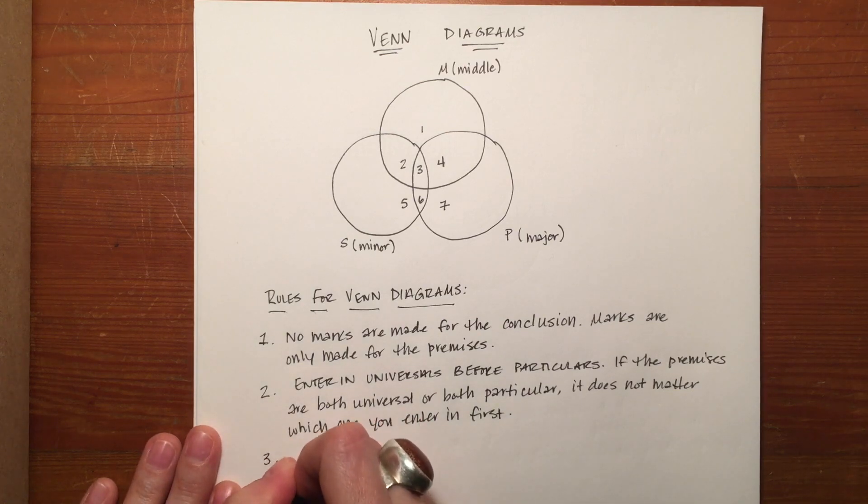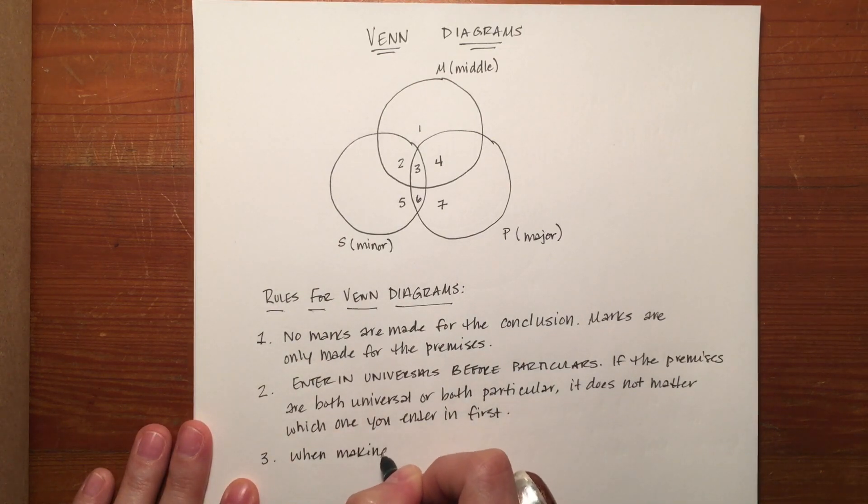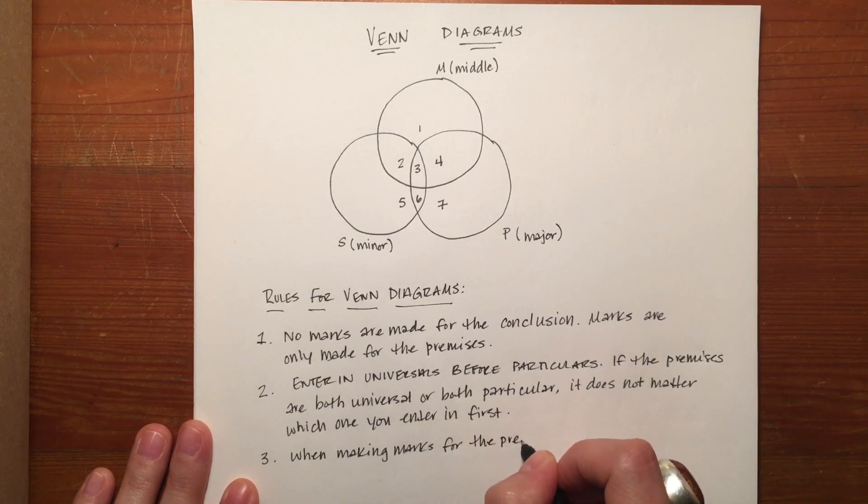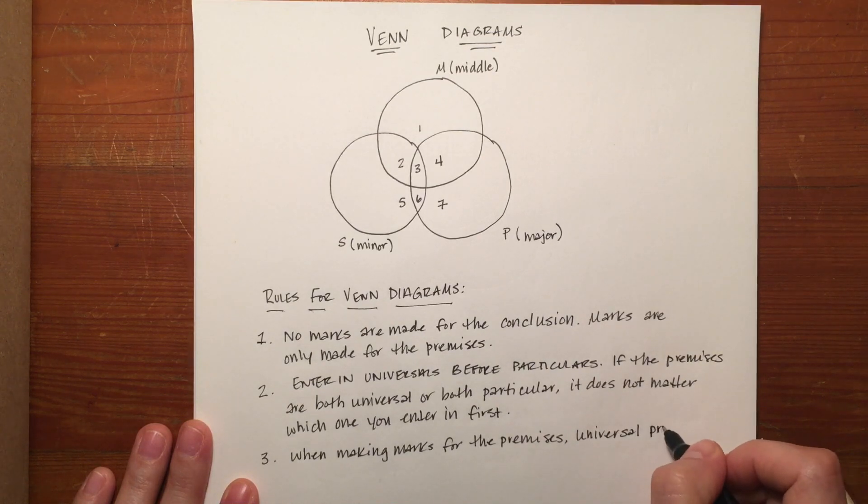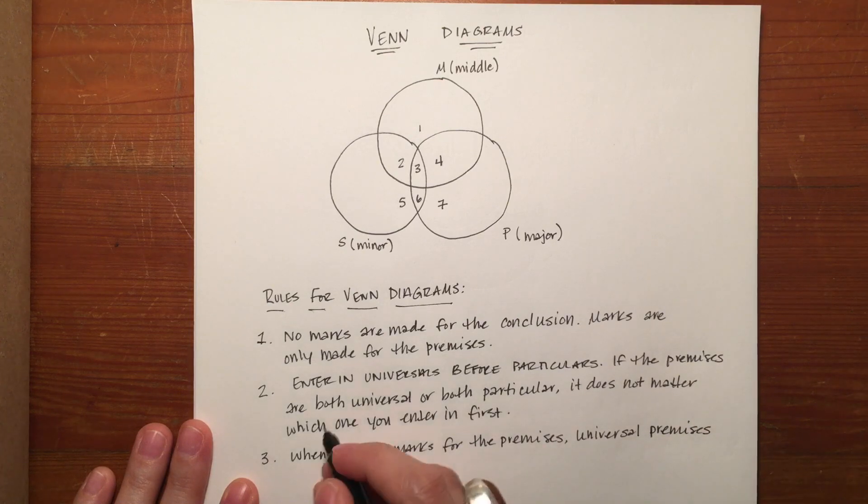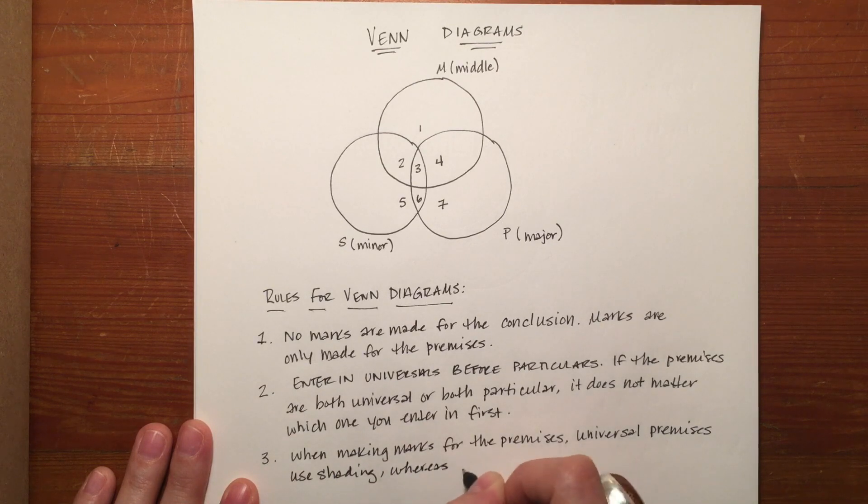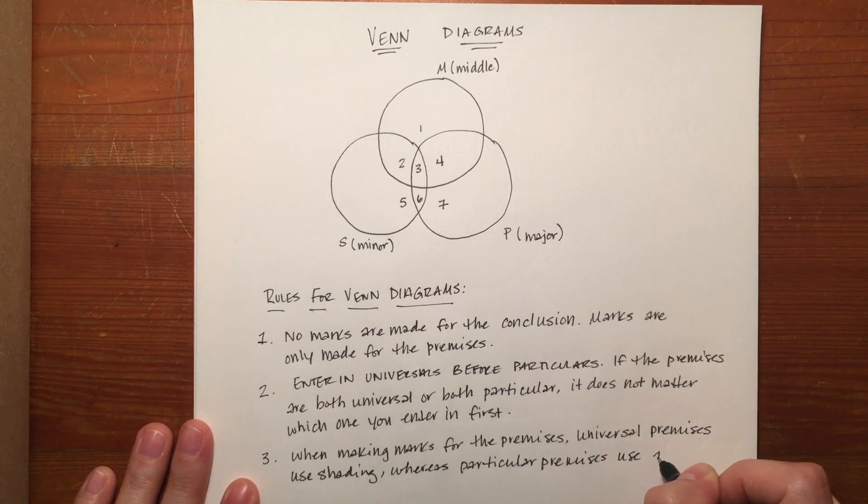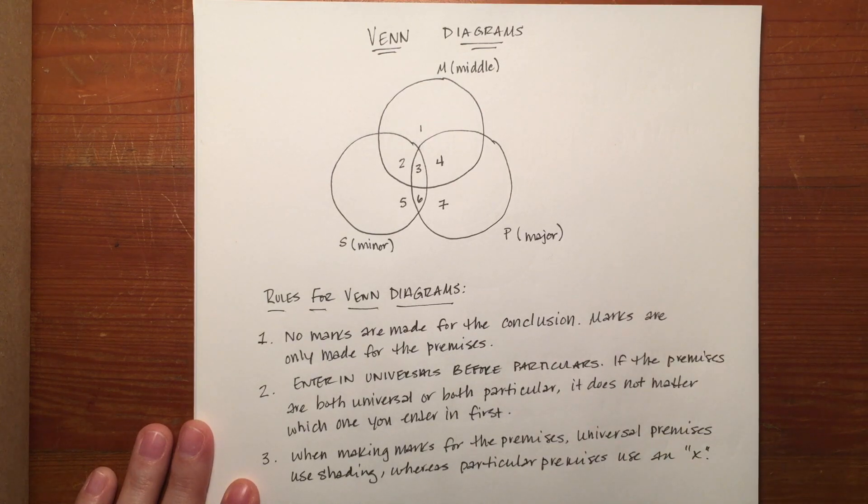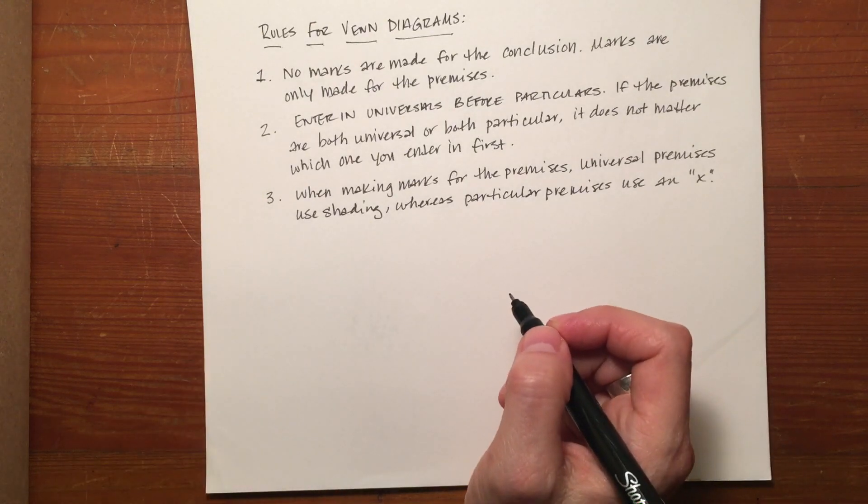Now, the next rule that I'll share with you is that when making marks for the premises, universal premises use shading, whereas particular premises use an X. I'm going to move this diagram up a little bit just so that I can show you how that works out.